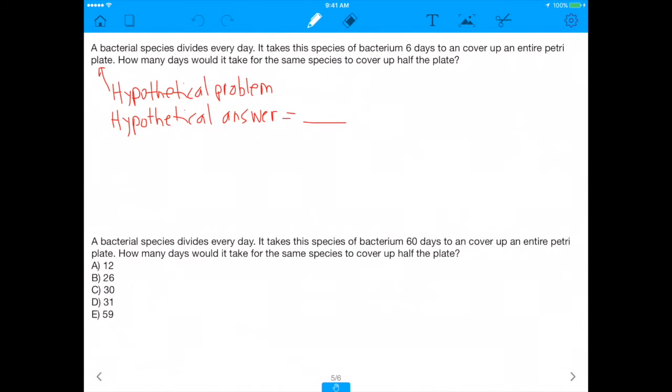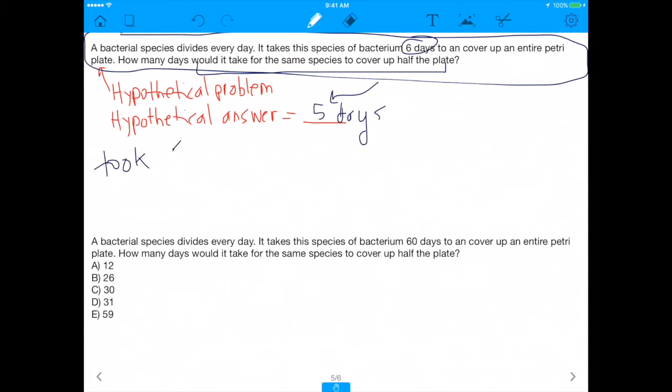So we didn't answer this question per se, but we still got an insight into how this question works. So now let's apply it to our actual question. In our hypothetical problem, which is shown up here, you'll see that we actually talked 6 days. We said it takes 6 days to cover an entire plate. And we said the hypothetical answer to this hypothetical problem was that the amount of time, how long would it take for the same species to cover up half a plate, that would be 5 days, right? It would take 5 days for this hypothetical species to cover up half the plate.